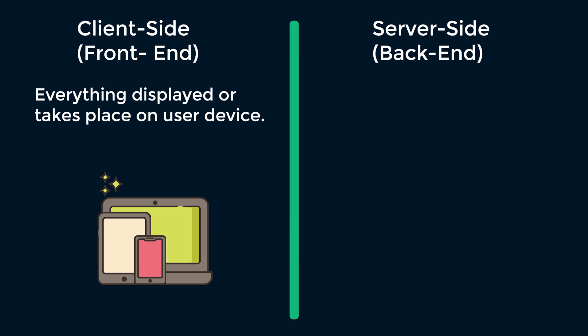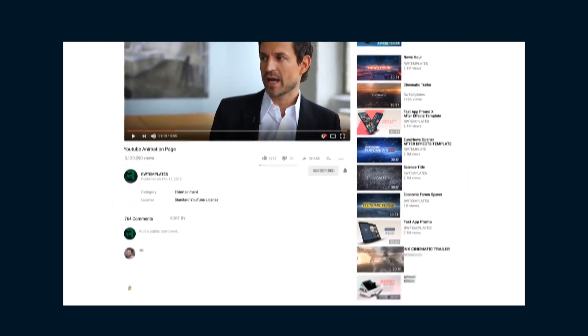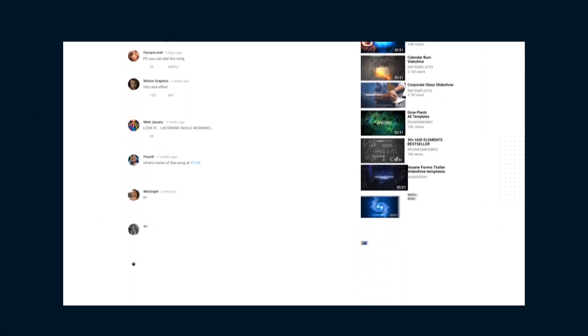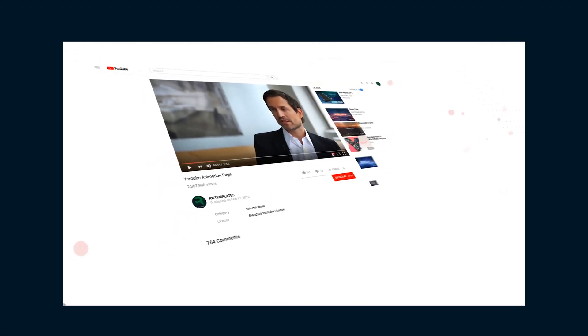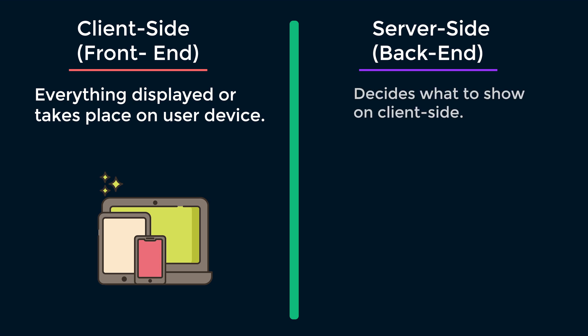Client-side includes everything the user sees, such as images, text, video, and the rest of the elements and their actions like click, scrolling, seeking — everything is summed up into one word: client-side. On the other end, we have server-side. To run a website, we need both client-side and server-side. The visible parts of a website are called client-side, but everything is also processed and fetched from server-side.